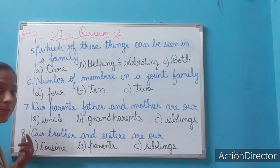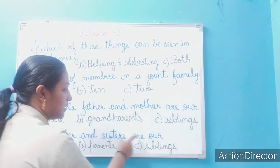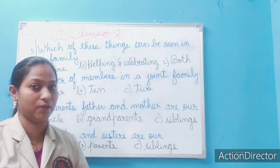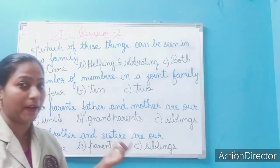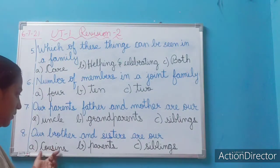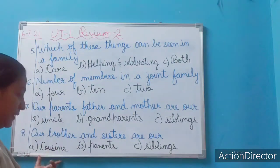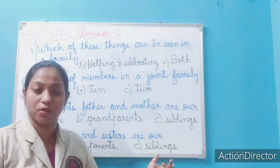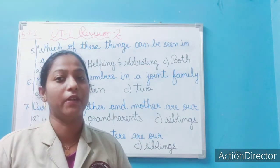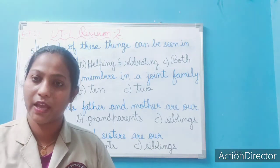Question 8, the last question: Our brothers and sisters are our blank. They are known as what in relation to us? The options are cousins, parents, or siblings. Our brothers and sisters are related to us as — what will be their relation? Write down the correct answer.